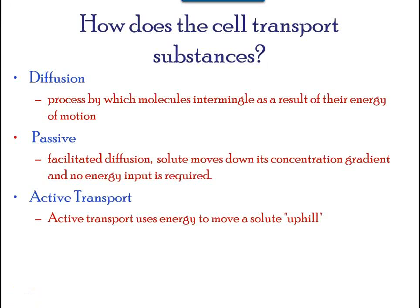Plasma membranes must allow certain substances to enter and leave a cell while preventing harmful materials from entering and essential materials from leaving. In other words, plasma membranes are selectively permeable. They allow some substances through but not others.